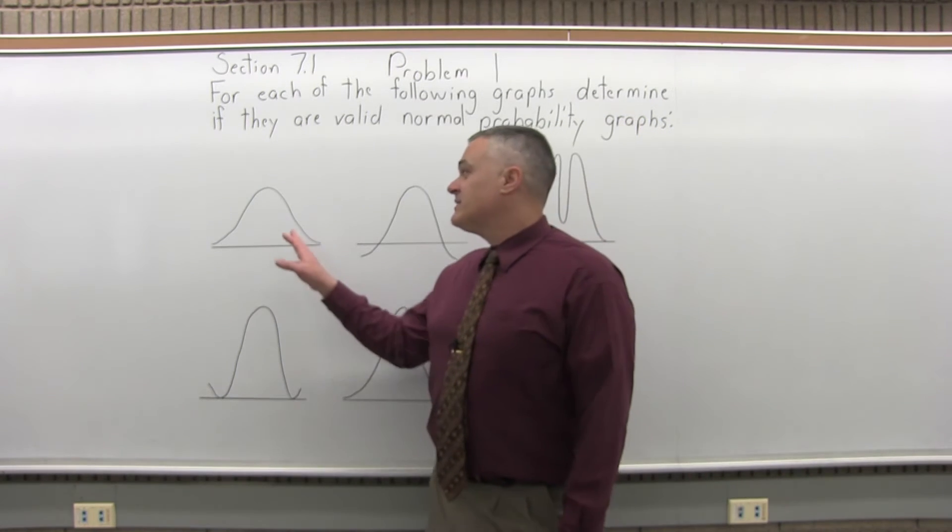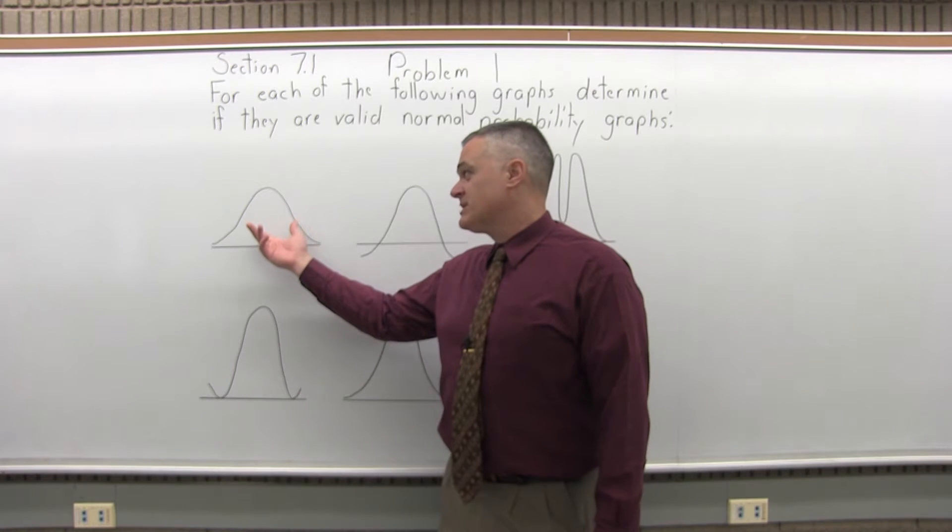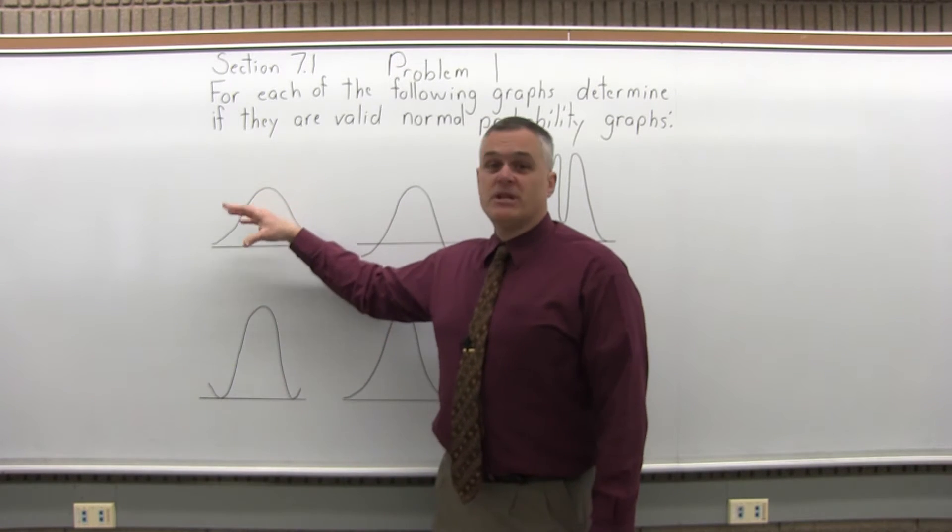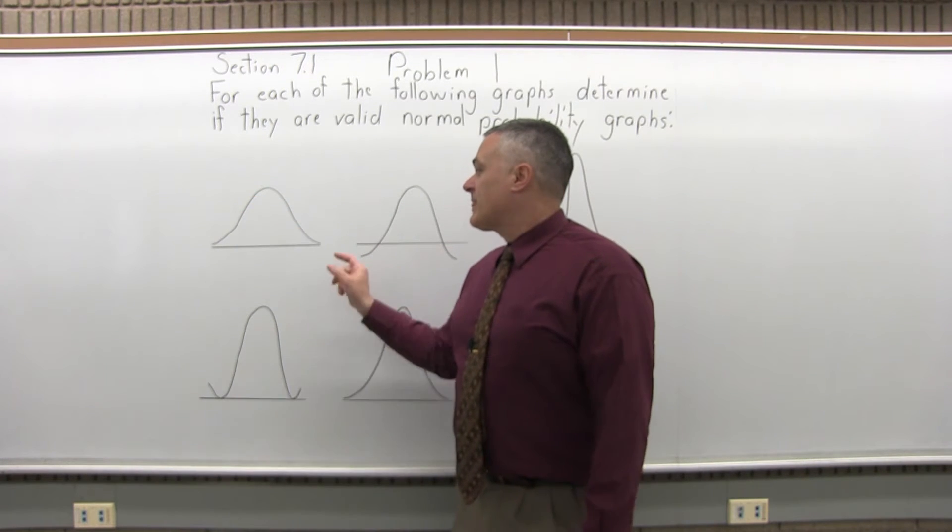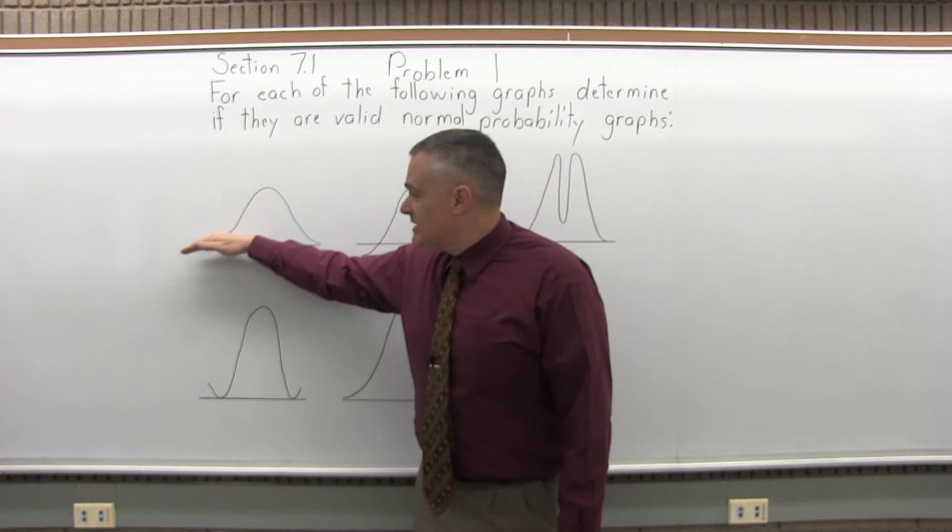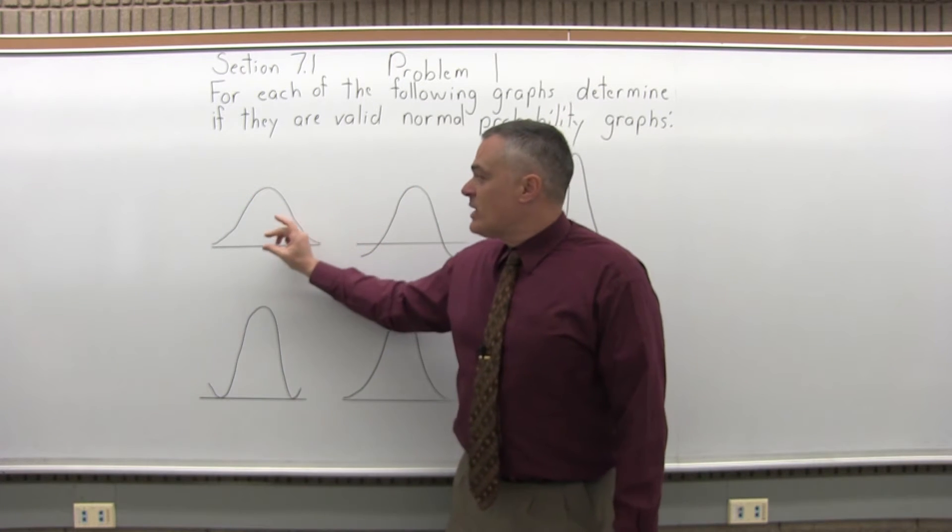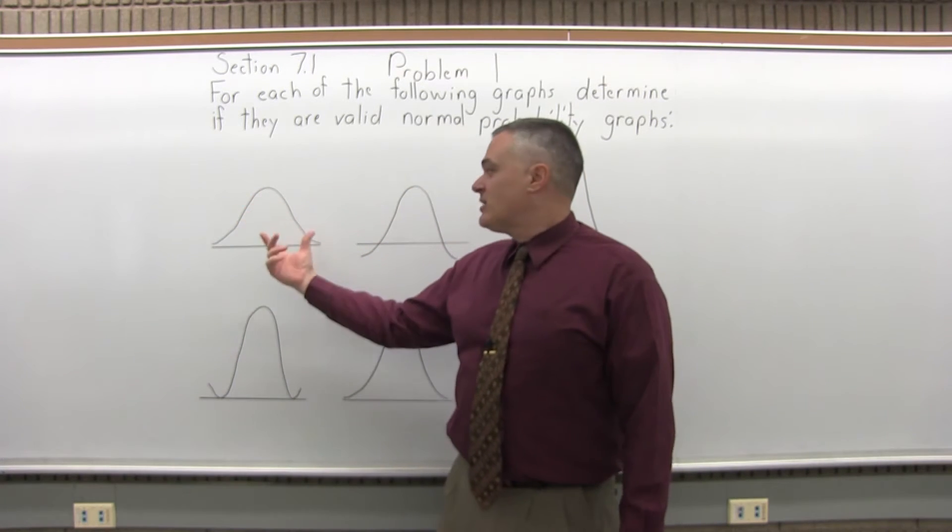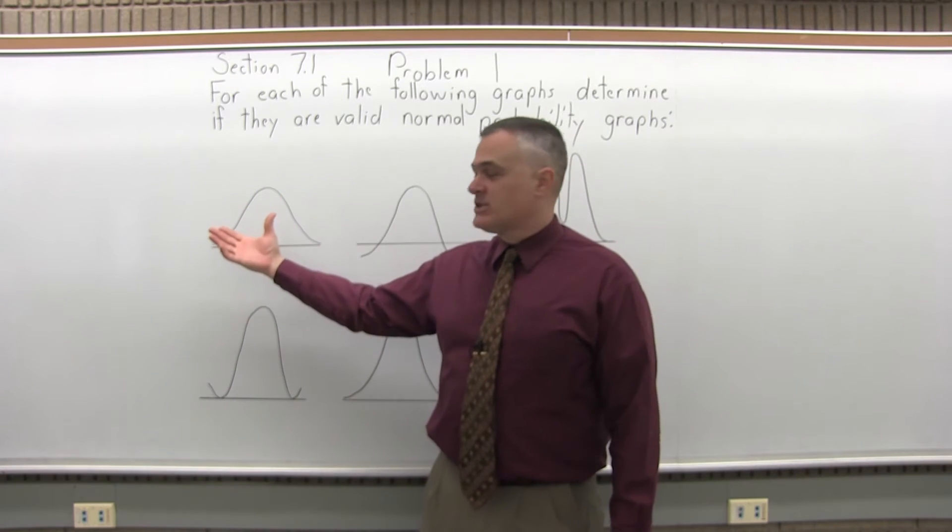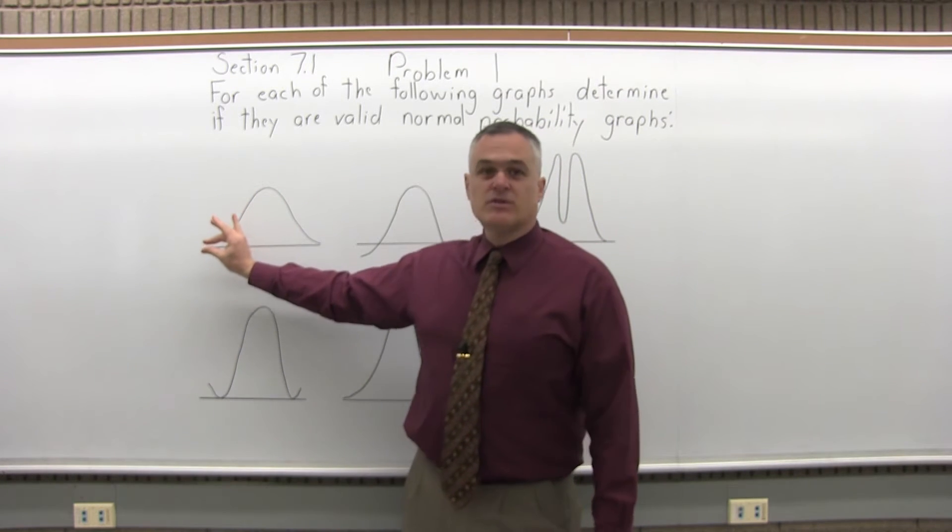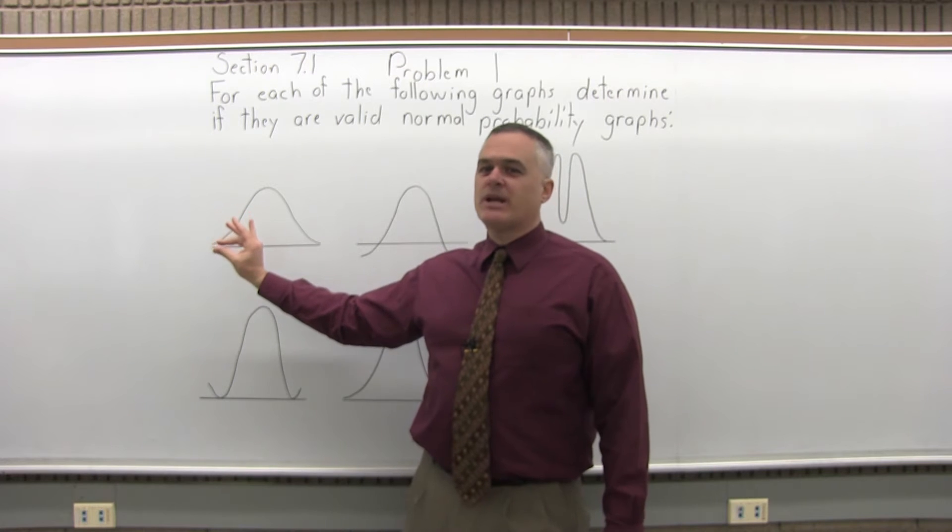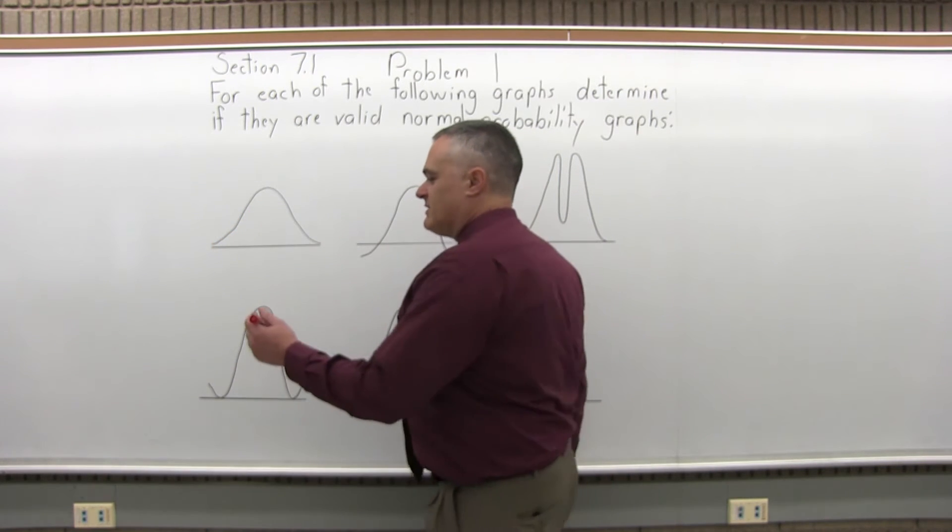So what you want to see is that the graph is symmetric. This first one is symmetric. It has approximately a bell shape. And the little lines, the ends of the graph are not quite supposed to touch the line. What happens is they don't really ever stop. They continue forever in both directions. They get closer and closer and closer to the line underneath and they never quite get there. So this first one is valid.